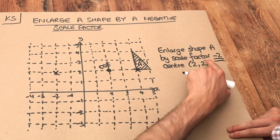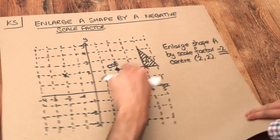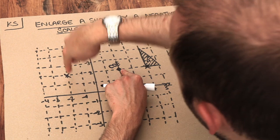So it seems that when we have a negative scale factor, we end up on the other side of the centre of enlargement.